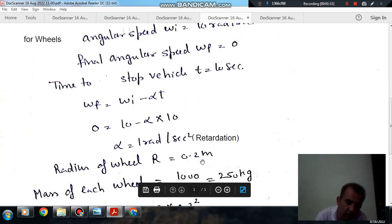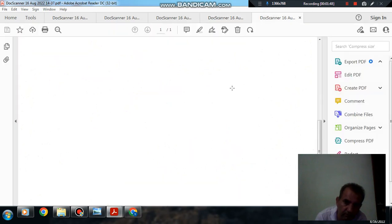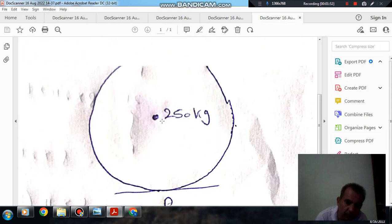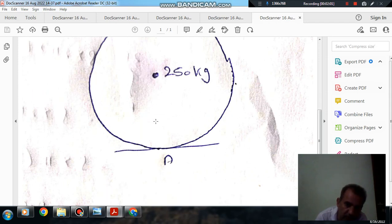Now, radius of each wheel R is 0.2 m, and mass of each wheel is 1000 by 4. Because mass is uniformly distributed on each wheel, it will be 250 kg. Now this 250 kg will be at the center of the wheel, and the wheel is rotating about this point. So, this mass is rotating about this point, and its radius of gyration will be the radius of the wheel.